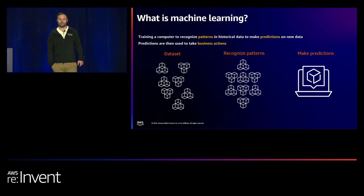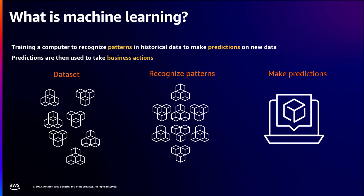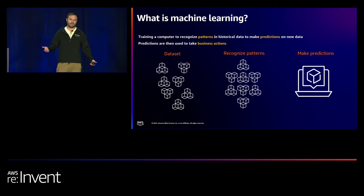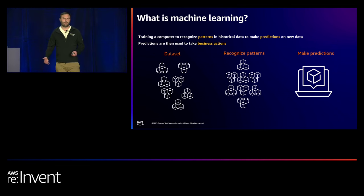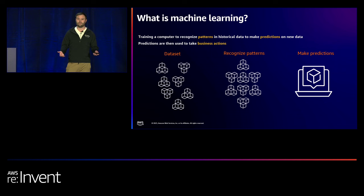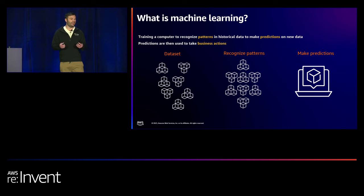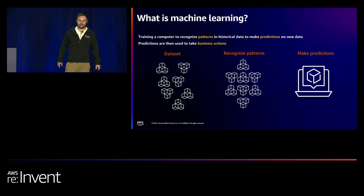Let's start with an intro to generative AI. Before we get into that, it's important to cover machine learning. At its core, machine learning is where we've got some data set and we're training a model on that data set to make predictions on some new unseen data, rather than a classical programming approach where a developer explicitly defines rules.